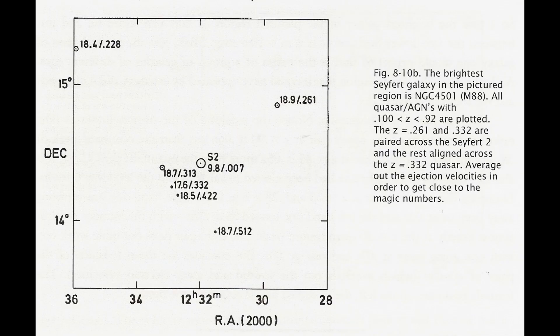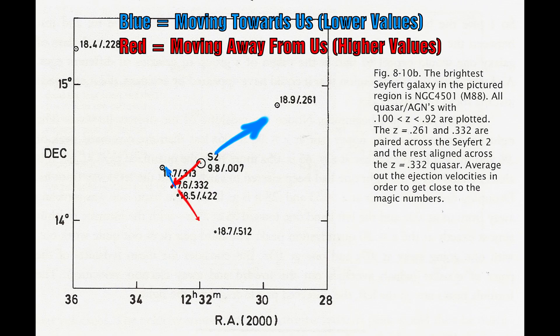Here is another example, M88 which has a number of quasars that surround it. We see one set of quasar pairs across this at z equals 0.261 and 0.332. We then also see another line from the quasar to the left with a redshift of 0.322.